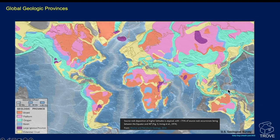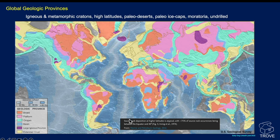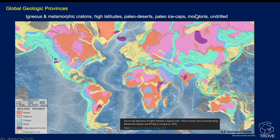We can look at that in terms of the geology at a very high level. We can see that there are unlikely to be source rocks associated with shield environments, or for that matter orogenic belts — but some. The major area where we see hydrocarbons is in the basins and the extended crusts. We see that the majority of source rocks occur between the equator and 40 degrees north and south. The places we won't find them are in igneous and metamorphic cratons. We won't find source rocks developed at high latitudes, in paleo deserts, or paleo ice caps.